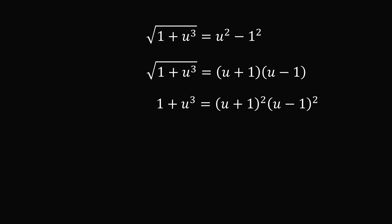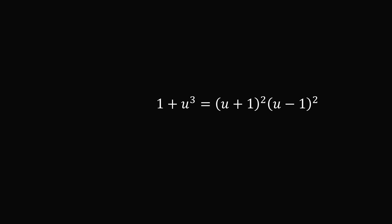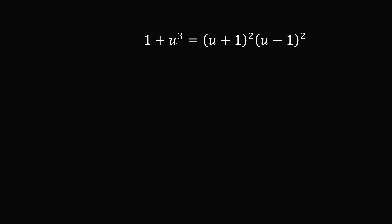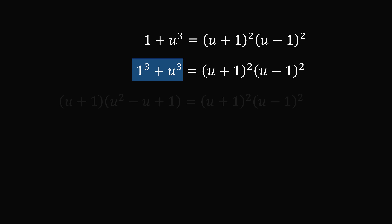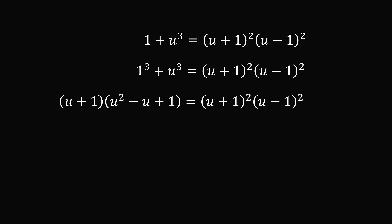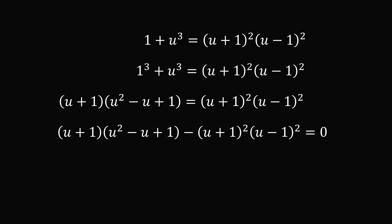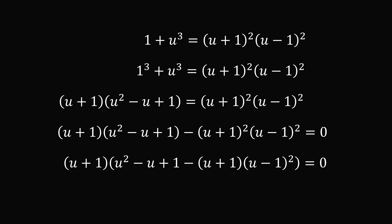We square both sides again to eliminate the remaining square root, giving a much more manageable equation. On the left-hand side we have 1 plus u cubed, and since 1 equals 1 cubed, this is a sum of cubes: 1 cubed plus u cubed. We factor by the sum of cubes formula, then bring everything to the left-hand side. We notice a factor of u plus 1 in the first term and a square of u plus 1 in the second term, so we factor out u plus 1.